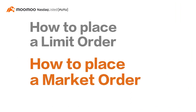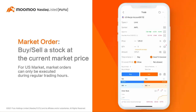Now, let us show you how to place a market order. A market order refers to buying or selling a stock at the current market price. Do note that you have no guarantee on the transaction price, as your order may be filled at any price as compared to a limit order. In most market conditions, a market order can be immediately executed.